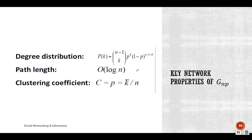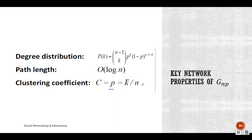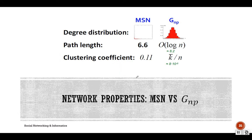To summarize the three key properties of the random graph model: degree distribution follows a binomial distribution; path length is O(log n), which is a very small value; and the clustering coefficient is also very small — meaning the model does not create highly connected local groups — with value approximately ⟨k⟩/n.